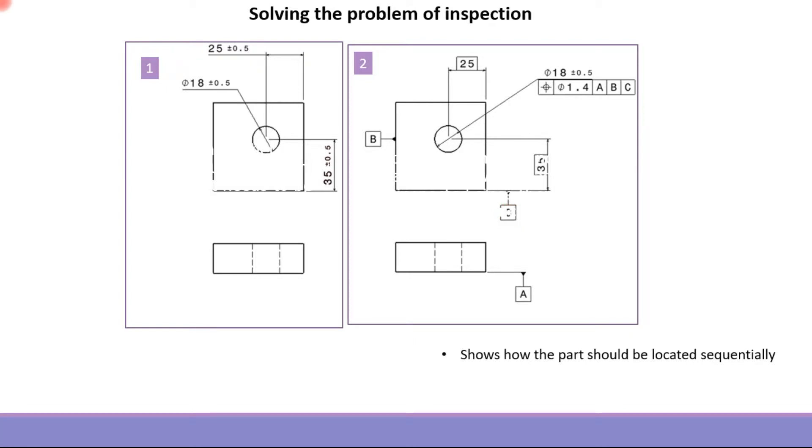So the part will be located by the inspector sequentially depending on the drawing. Then a pin gauge will be inserted to verify that this hole is within the position tolerance or not. So the location of the hole is verified by inserting a pin gauge after the part has been located with respect to A, B, and C datums.